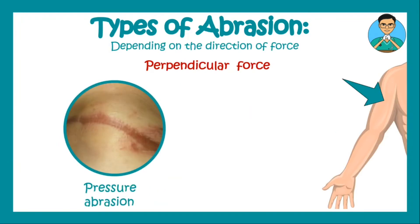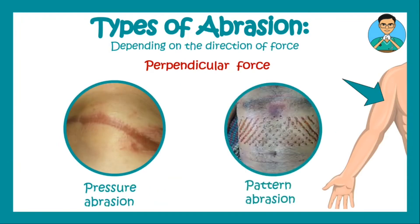If the pressure is perpendicular, we can get something known as a pressure abrasion and patterned abrasion. Pressure abrasions are basically formed due to a tight force over any part of the body. In this image, you can see this is a ligature mark, and this pressure abrasion is formed by the tight fitting of the ligature on the neck. On the other hand, in the patterned abrasion, you can see a tire mark — the tire which has caused the abrasion on the abdomen of the body.